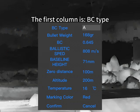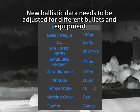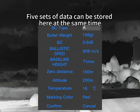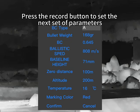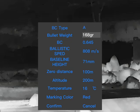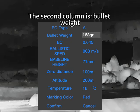The first column is the BC type. New ballistic data needs to be adjusted for different bullets and equipment. Five sets of data can be stored at the same time. The sets are named B, C, D, and E. Press the record button to set the next set of parameters.